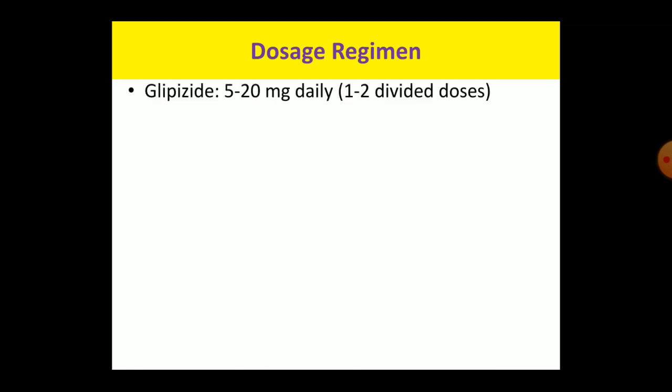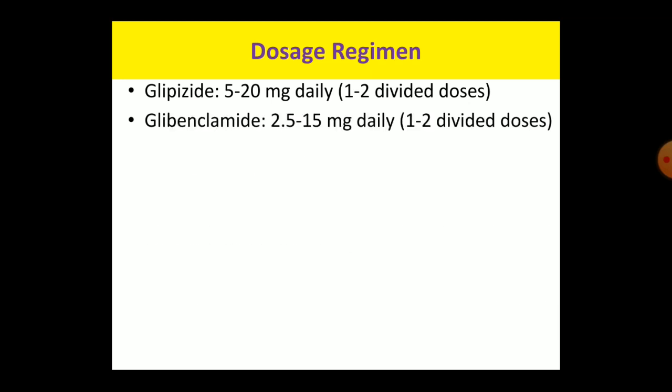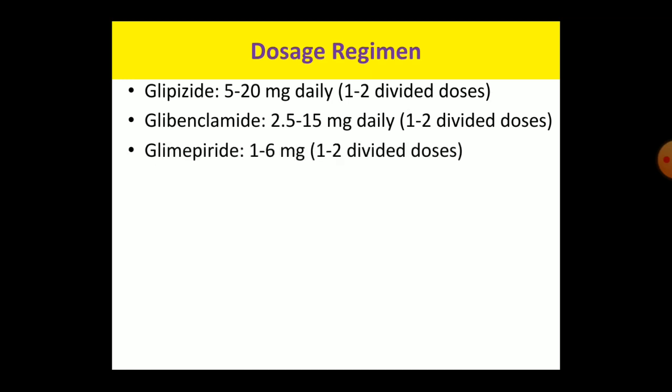Regarding the dosage regime, you should know the doses of 2–3 commonly used drugs. The most commonly used drug is glipizide, which starts with 5 mg and increases up to 20 mg, usually given once or twice daily. Similarly, glibenclamide is 2.5–15 mg daily and glimepiride is 1–6 mg daily. All these drugs are given in one or two divided doses.